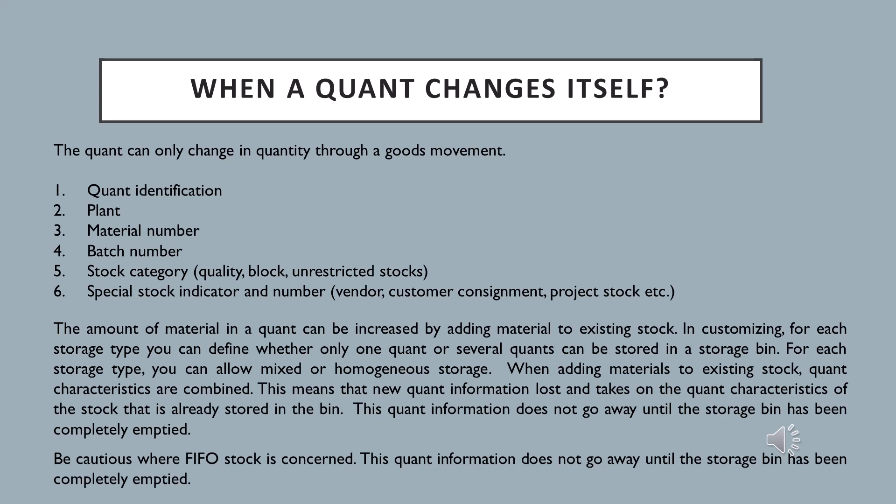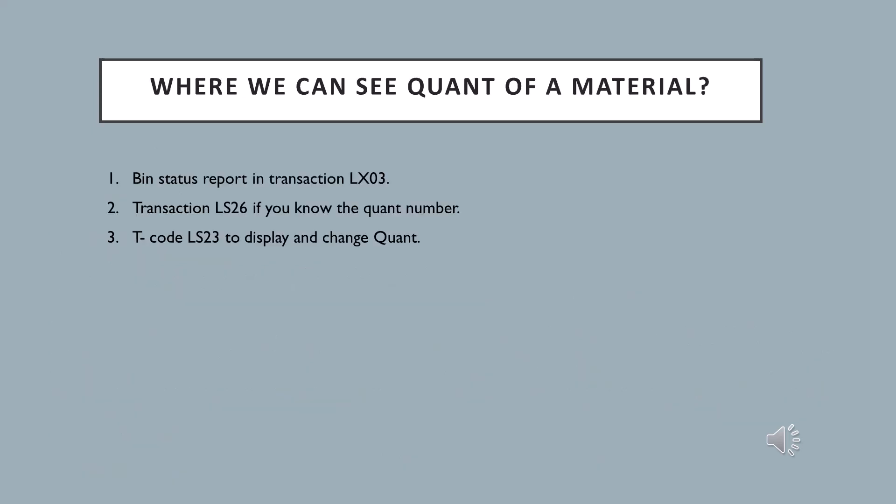What happens when we put material into a storage bin? The system assigns a quant number. When we again put the same material into the same storage bin, the characteristics of the new material get merged and it adopts the same quant number that is already present in the storage bin.